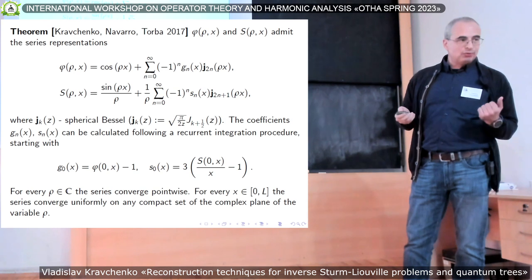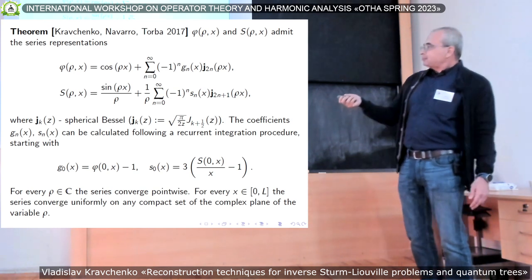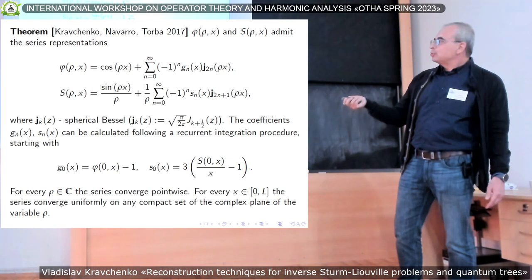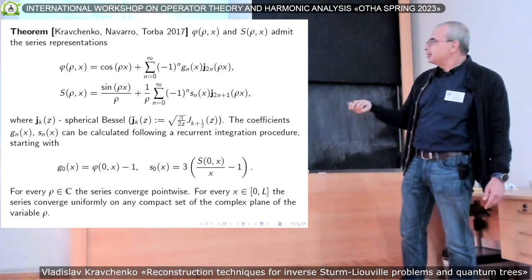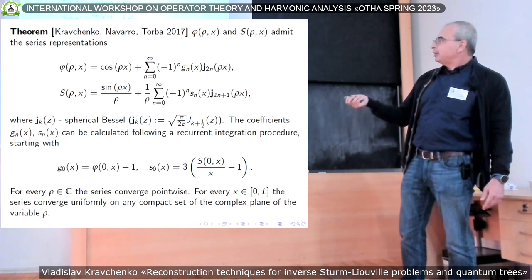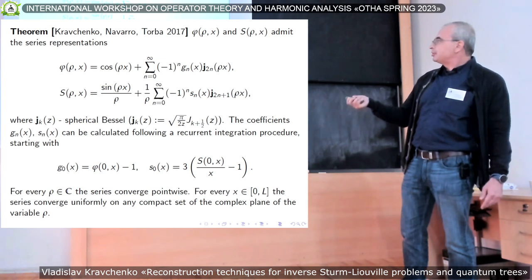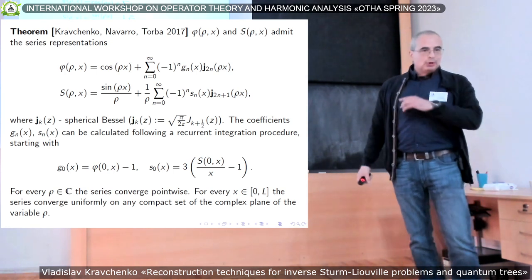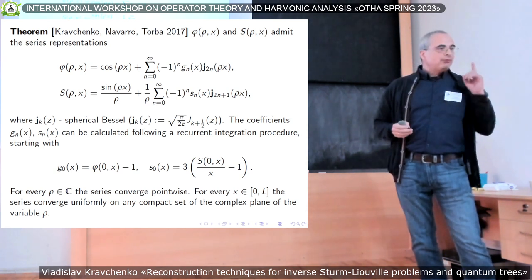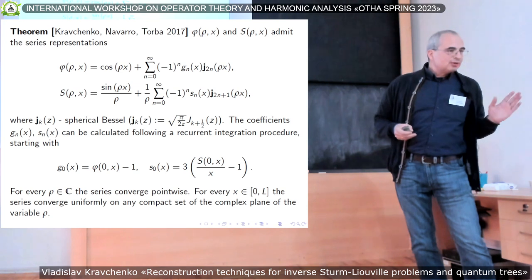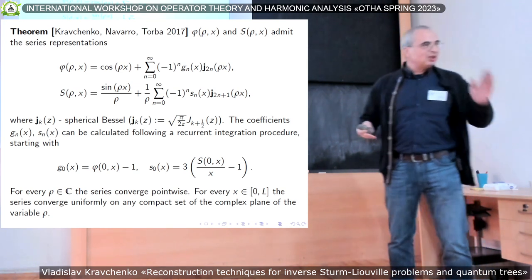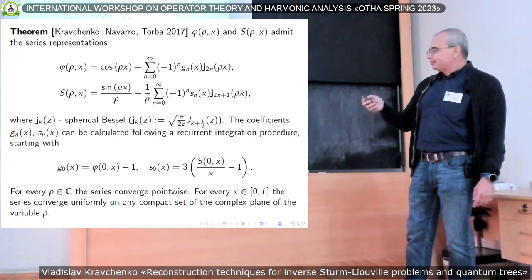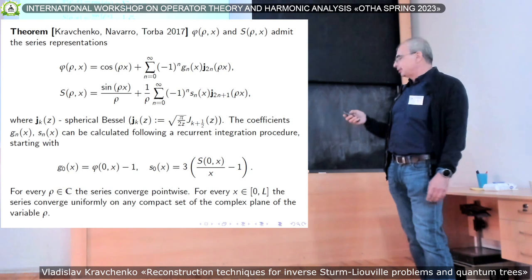For example, when solving the inverse problem, the coefficient g_0(x) is just the solution φ corresponding to ρ equal to 0, and something similar holds for the very first coefficient of the s series — it is the solution s for ρ = 0. This means that it is sufficient to find one of these very first coefficients; we don't need all the series, all other coefficients. Just one coefficient will allow us to recover everything — the potential and even the boundary conditions.